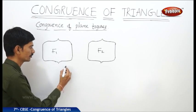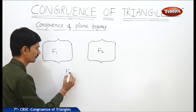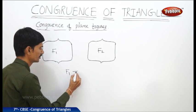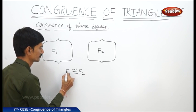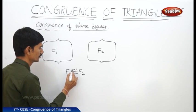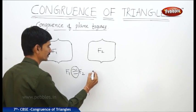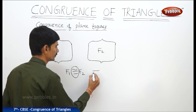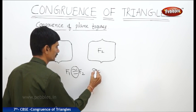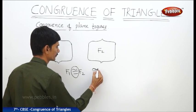The congruence of two figures is represented as: figure F1 is congruent to figure F2. This symbol represents the congruence criterion. If two figures are congruent to each other, we use this symbol to represent their congruence.